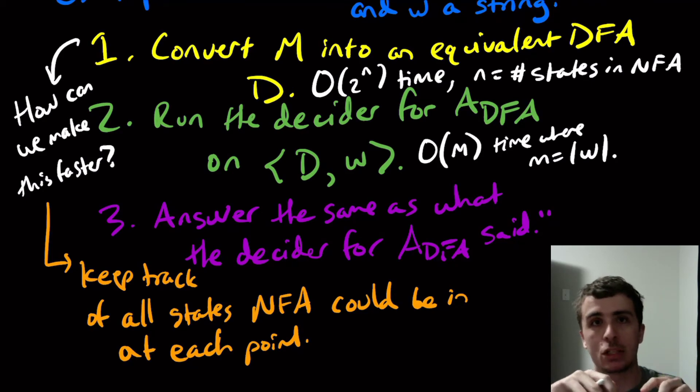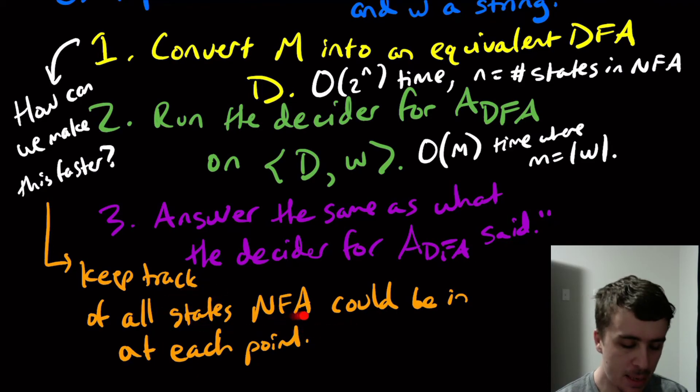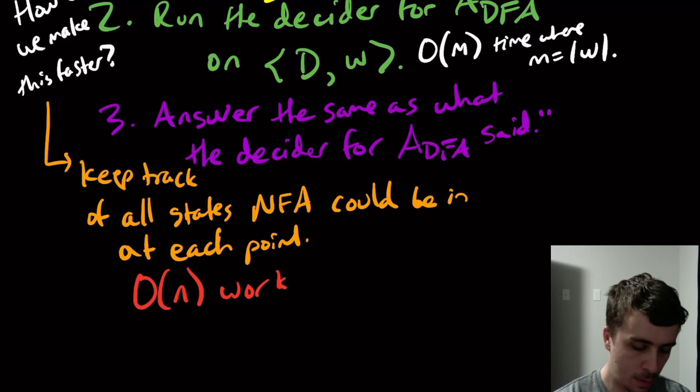And then what we need to do is just update those states as necessary using the build your states as you go method, which is just look at the transition function from every one of the states I'm currently in and union them all together. And that's pretty easy to do. I'll let you actually think about how to actually do that in practice or how to actually implement that. But this is going to be a linear amount of work for each character.